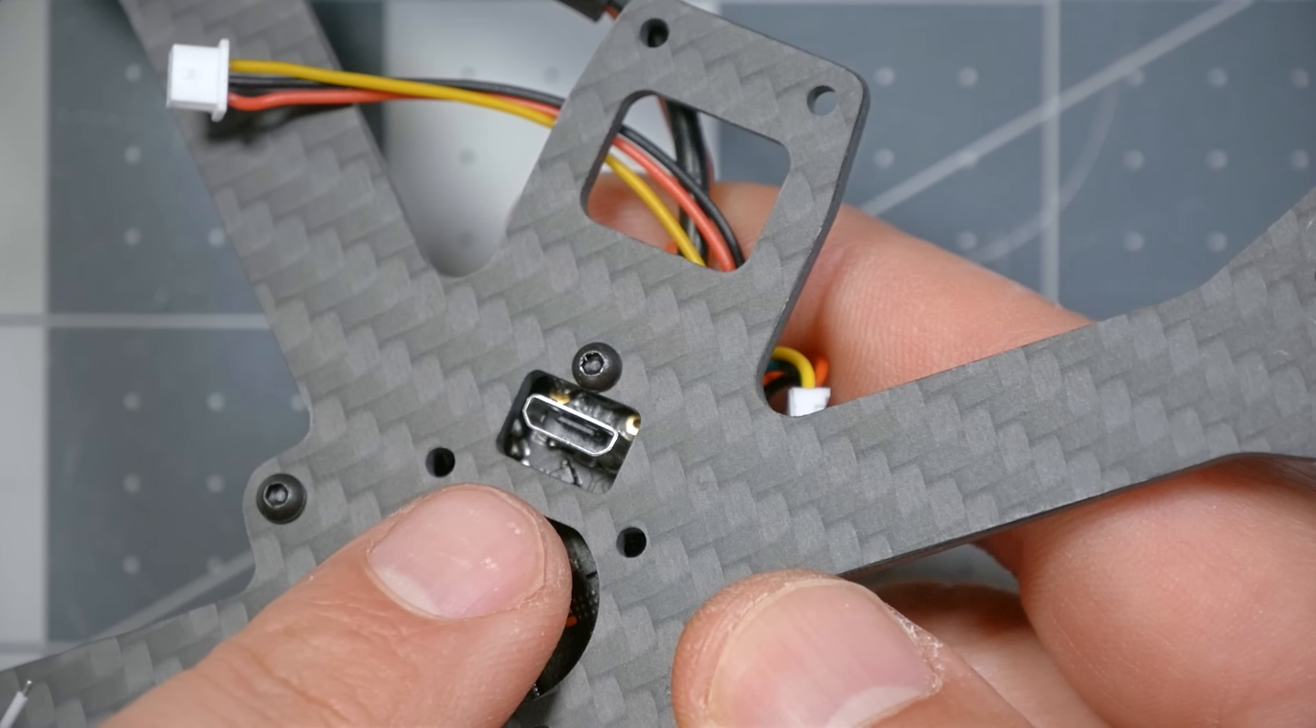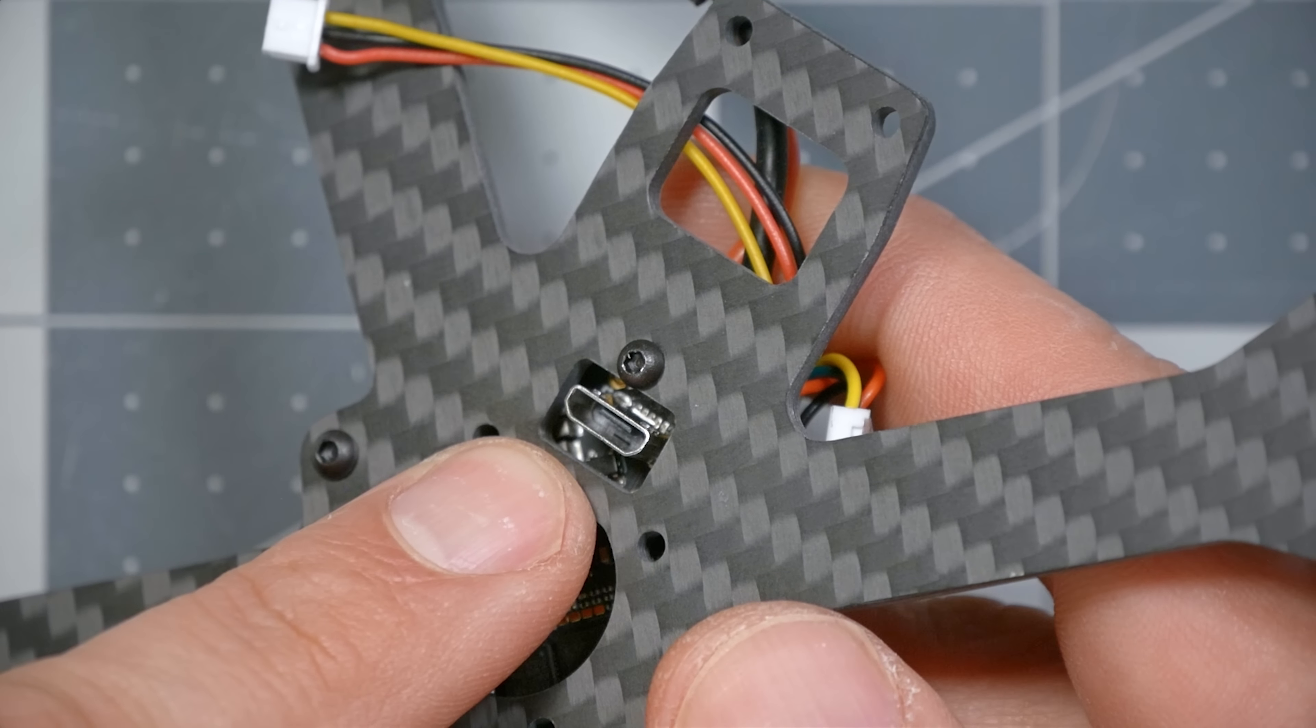I've just noticed a really nice improvement that they've made to this build. I don't know when this change was made, but the flight controller now has the USB port facing down, coming out the bottom of the bottom plate. On the previous version that I've got, you have to take off this plastic cover in order to get at the USB, which is a real pain.